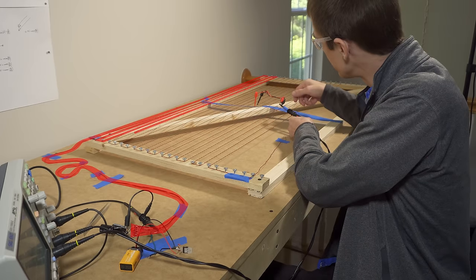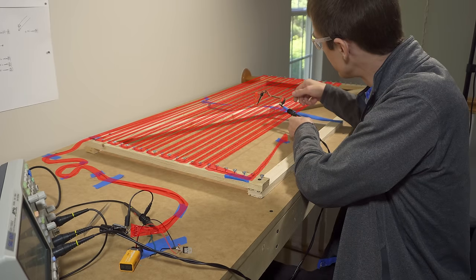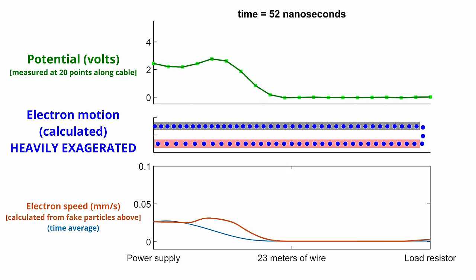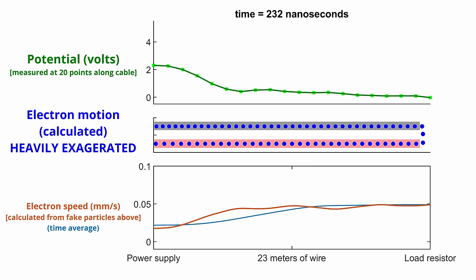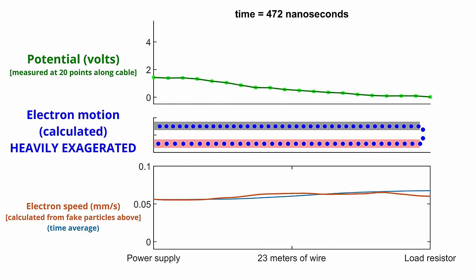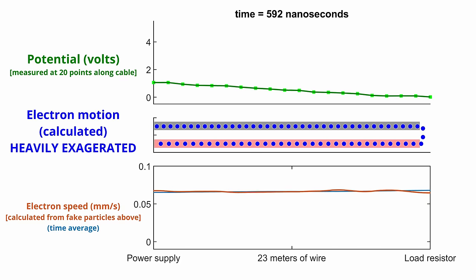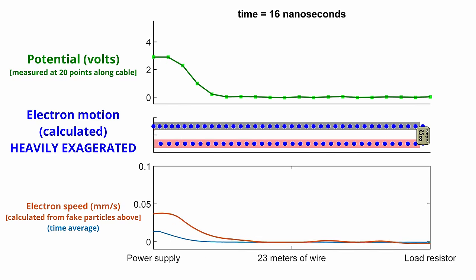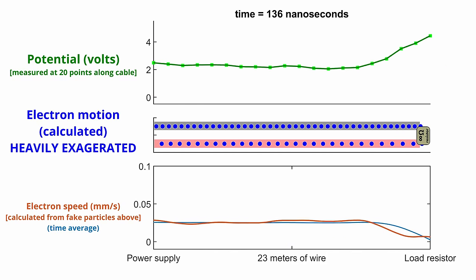But to recap, I'm sending pulses of electricity down this homemade cable and taking lots of measurements so we can see the actual propagation of the wave down the line. The animation you've been watching is what happens when the ends of the wire are connected so current can flow around the loop.